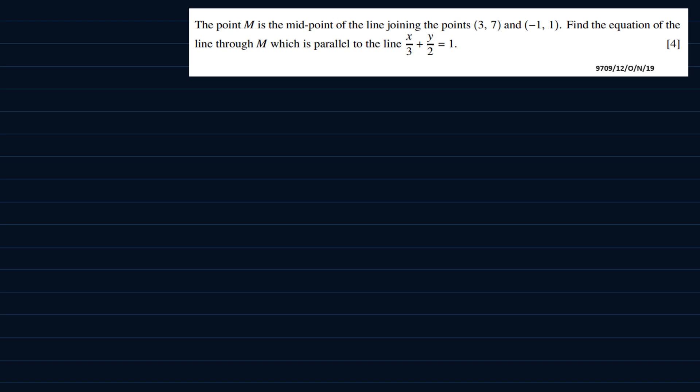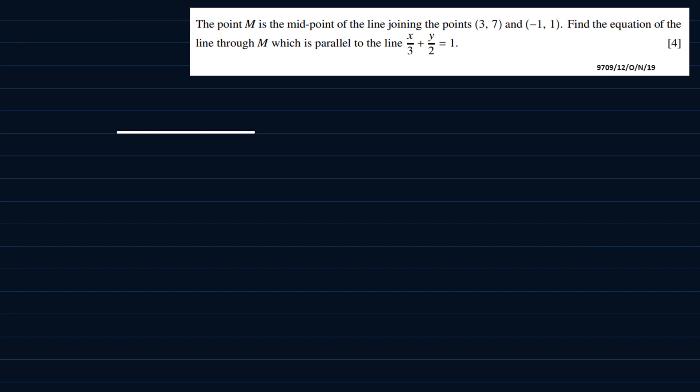So according to the question, we've got two points and a line joining the points. The two points are (3, 7) and (-1, 1). According to the question, M is the midpoint of the line joining the two points. So M should be somewhere in the middle here. And there's a line passing through the midpoint. So I'll just draw any line that passes through the midpoint, that is through M.